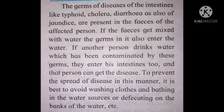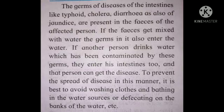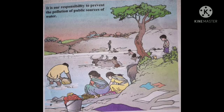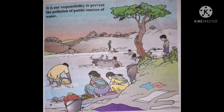To prevent the spread of disease through water, it is best to avoid washing clothes, bathing in, or defecating on the banks of rivers and water sources. As you can see in the picture, some ladies are washing their clothes, some are washing animals, and one man is taking water home. Because of this, the water gets contaminated and various diseases can affect the people.